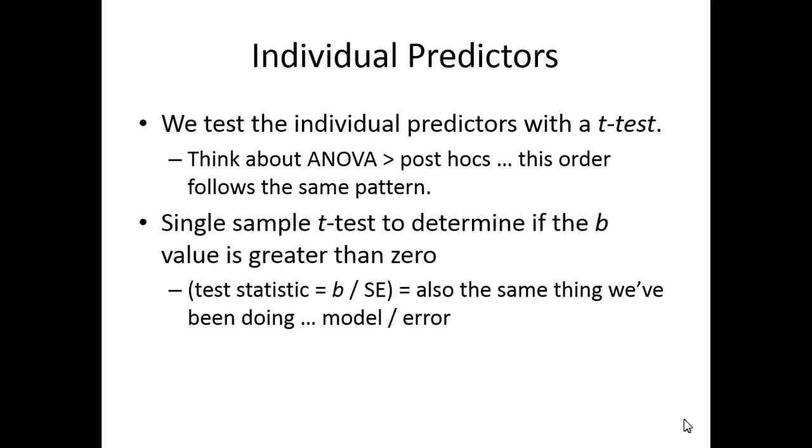So the test statistic is B the slope divided by standard error and that's the exact same thing we've been doing. T-test is what mean difference divided by standard error. So it's now B divided by standard error. So it's still a ratio of good model variance to error. So t is the same idea. It's like how much good variance accounts for and how much bad variance is and you want it to be big. So it's a single sample t-test though and not dependent or independent.